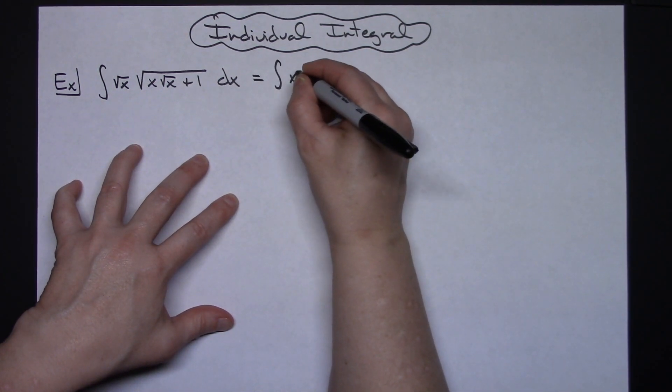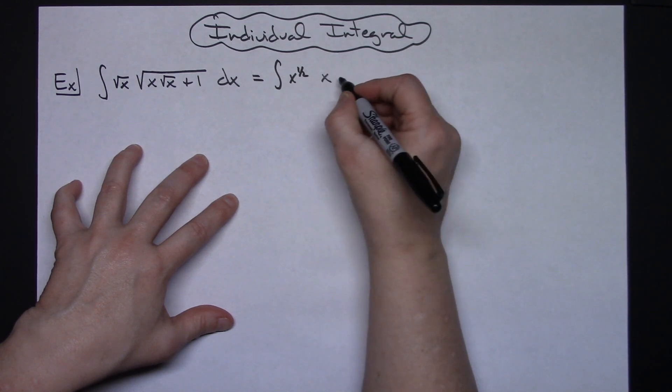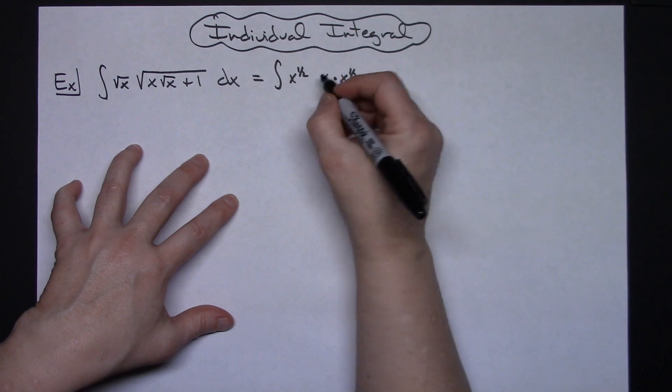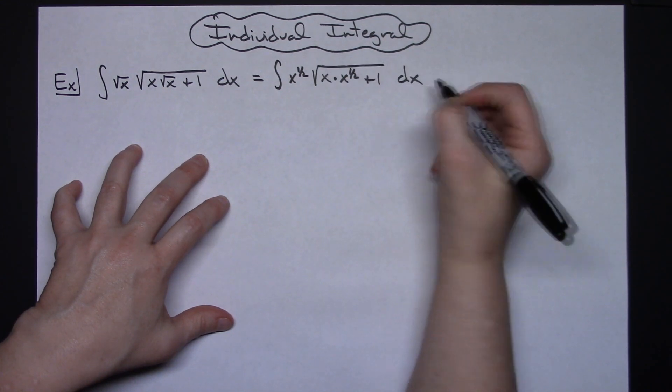So I'm going to have the integral of x to the 1 half and then we'll have x times x to the 1 half plus 1 all under that radical and then dx.